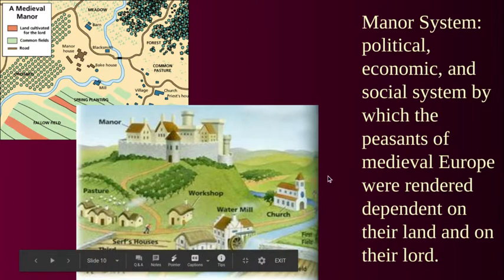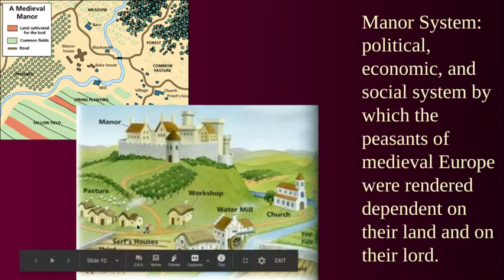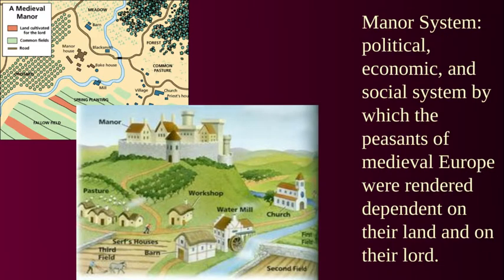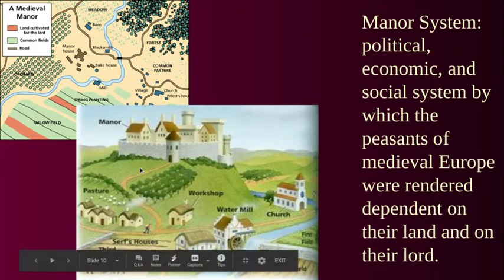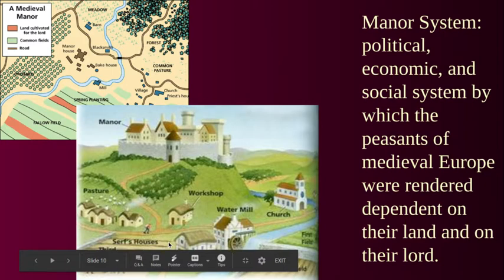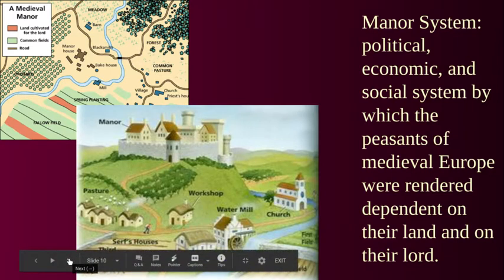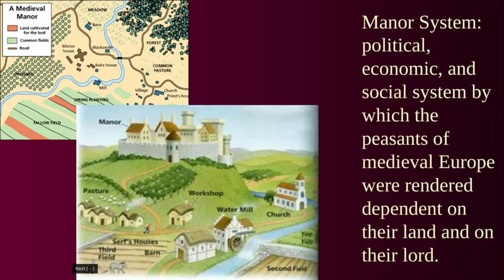The manor system is a political, economic, and social system by which the peasants of medieval Europe were rendered dependent on their land and on their lord. The manor or castle would be at the top of a hill or in a central, strategically sound location looking over the village — the serfs' houses, the churches, the mills, the workshops, the bakeries, the fields. There was always a direct path from the town to the castle. The manor system also involved rotating crops, because the more you farm on a particular plot, the fewer minerals and nutrients are present, so rotating crop locations leads to better, more responsible farming.